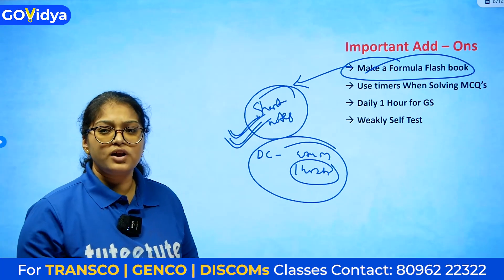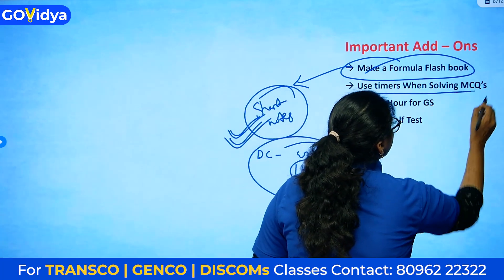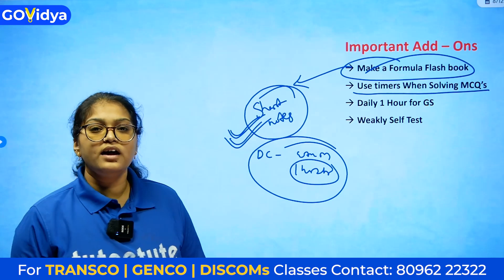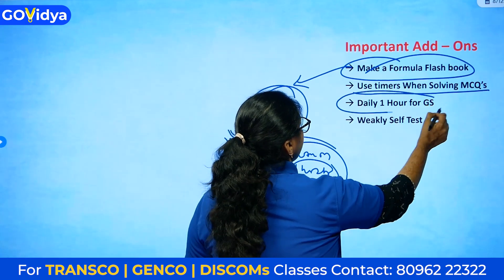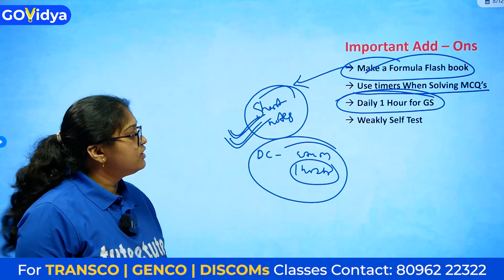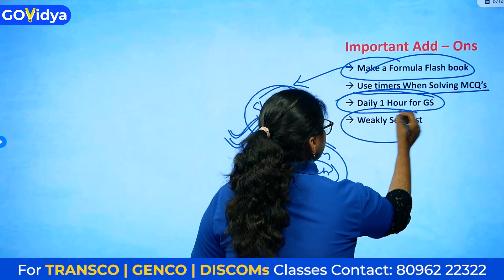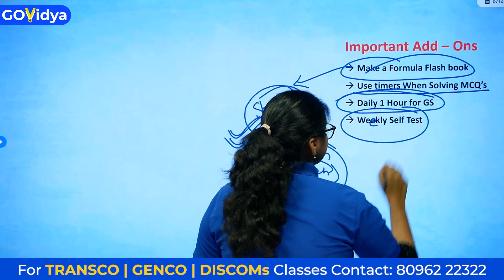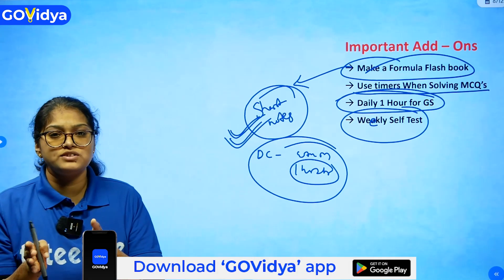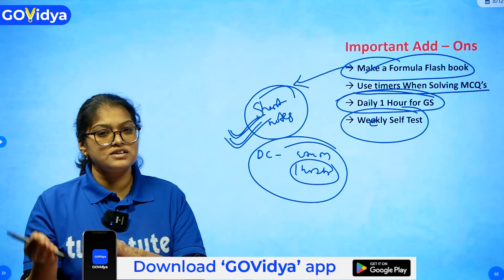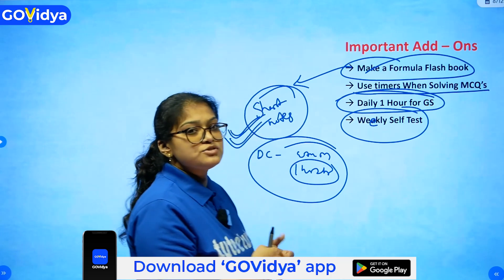Use timers while solving MCQs for speed and accuracy. Also, dedicate daily one hour to General Studies, since 20 marks are from the non-technical part. Additionally, conduct a weekly self-test — whatever you studied over six continuous days, test yourself on the seventh day. This is very useful for consolidating your preparation.